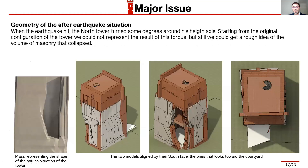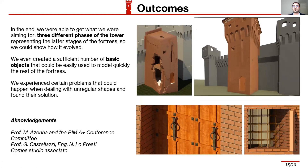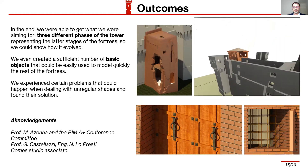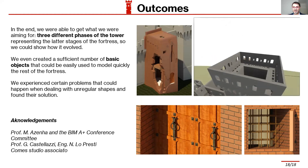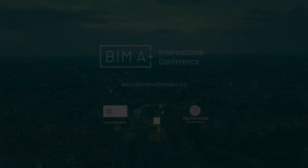Another issue was that during the earthquake, the tower was subjected to a torque, and starting from the pre-earthquake model, we could not represent this torque accurately. This is visible because at the end of the work, we were able to find a geometry model of the current state of the tower and noticed some differences. In the end, we were very happy with the results because we could comply with the requirements of both the E-BIM framework and the Inception project. Thank you very much — please feel free to ask any questions.